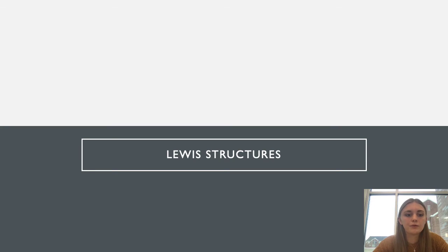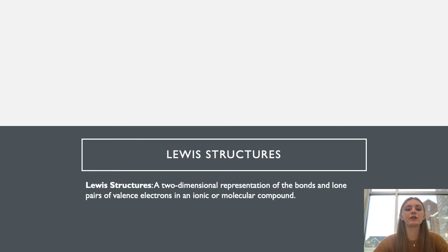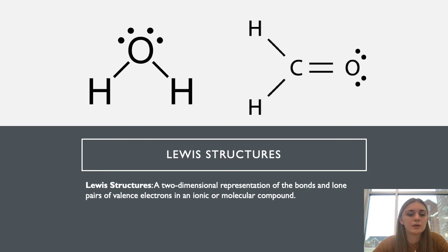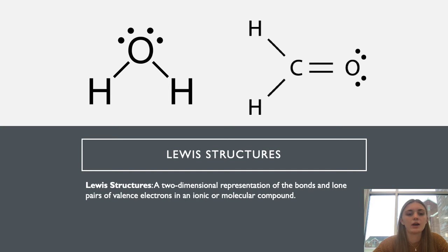Now we're going to talk about Lewis structures rather than Lewis symbols. Lewis structures are a two-dimensional representation of the bonds and lone pairs of valence electrons in ionic or molecular compounds — so we're talking about multiple atoms bonded to one another. We can see examples like H2O and CH2O, where the dashed lines show bonds and the dots represent lone pairs connected to the oxygen.